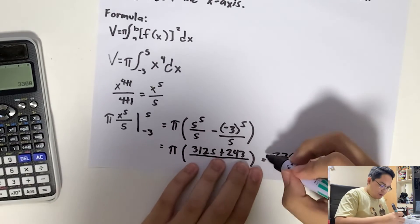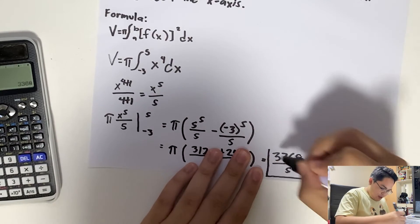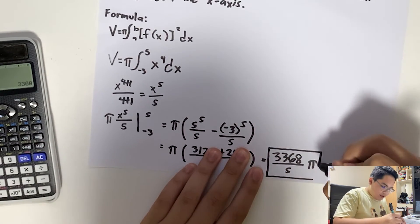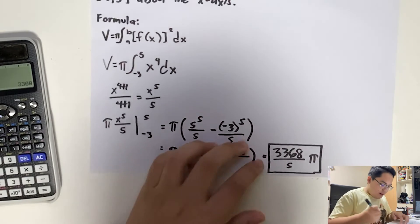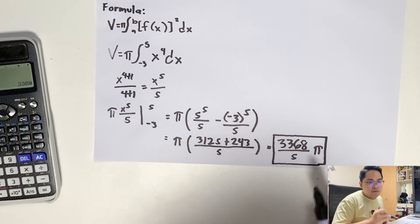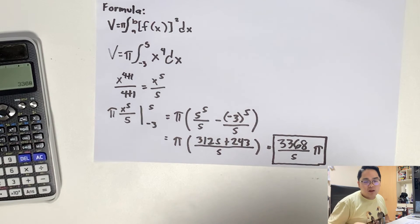So that will be our final answer. The volume of the solid of revolution, therefore, is 3368/5π. Thank you and that will be all.